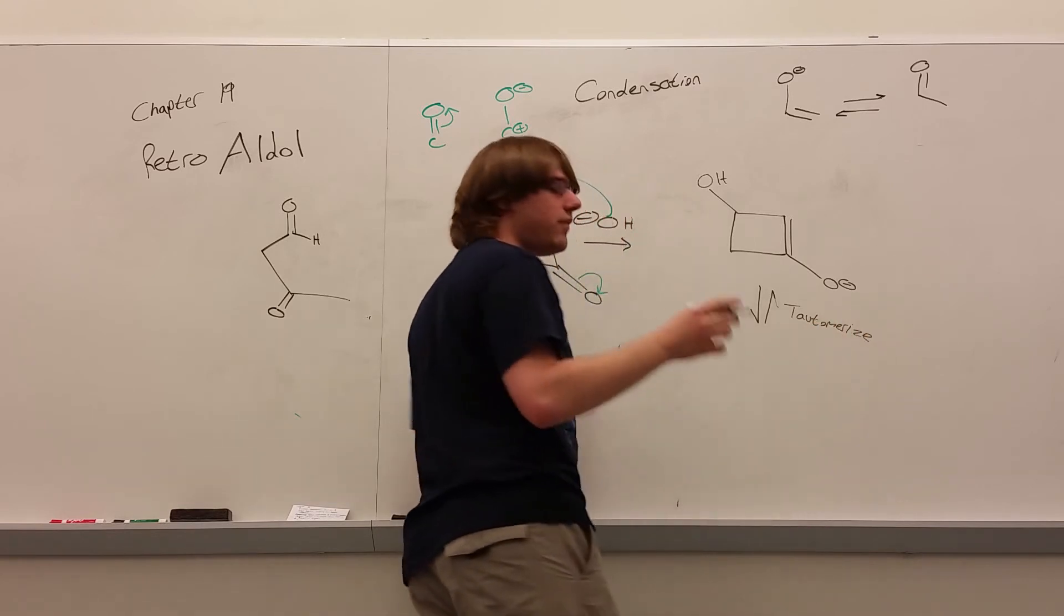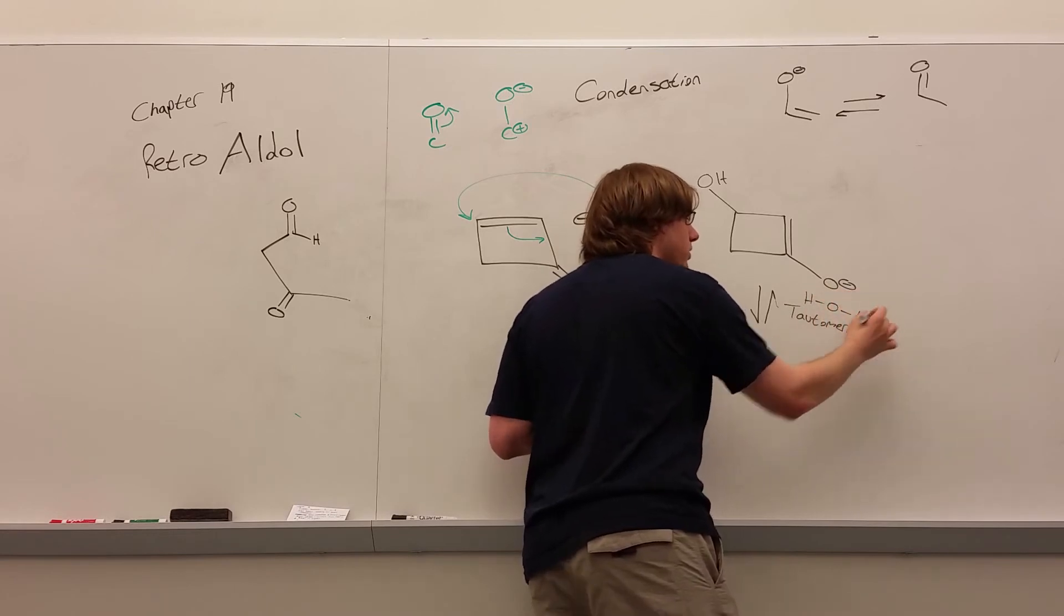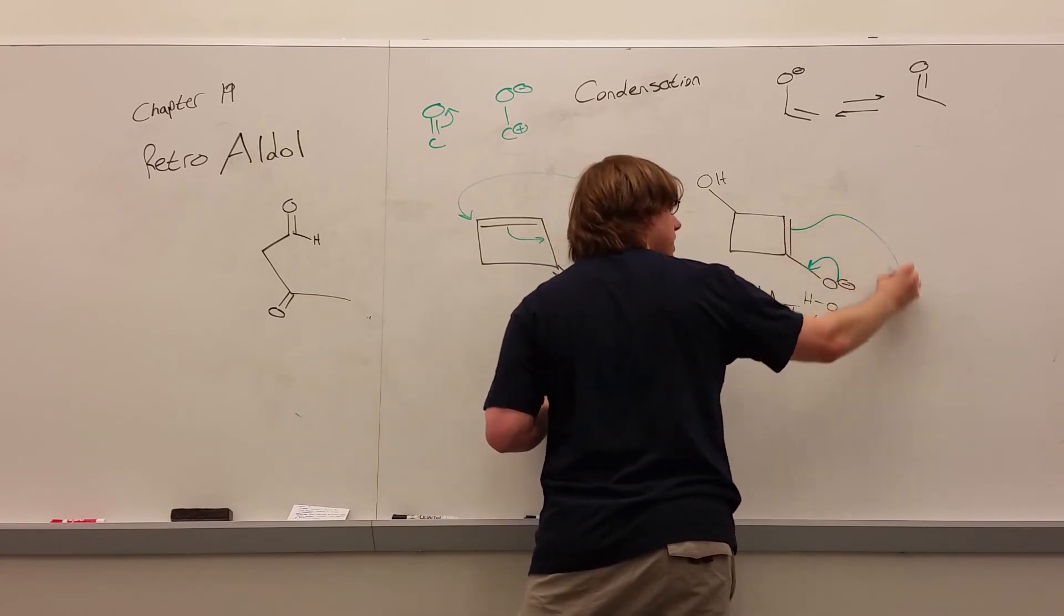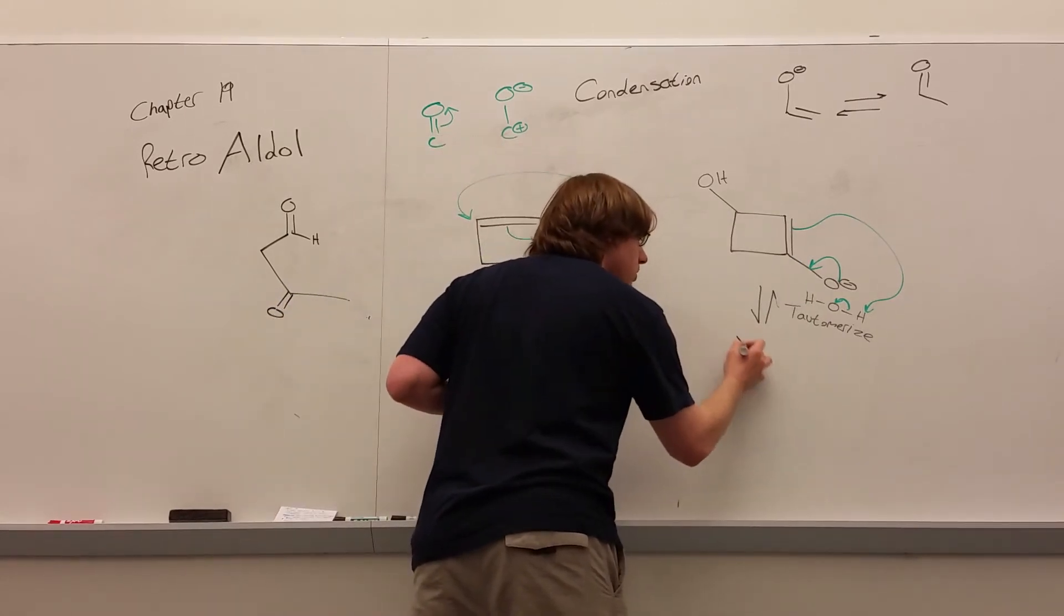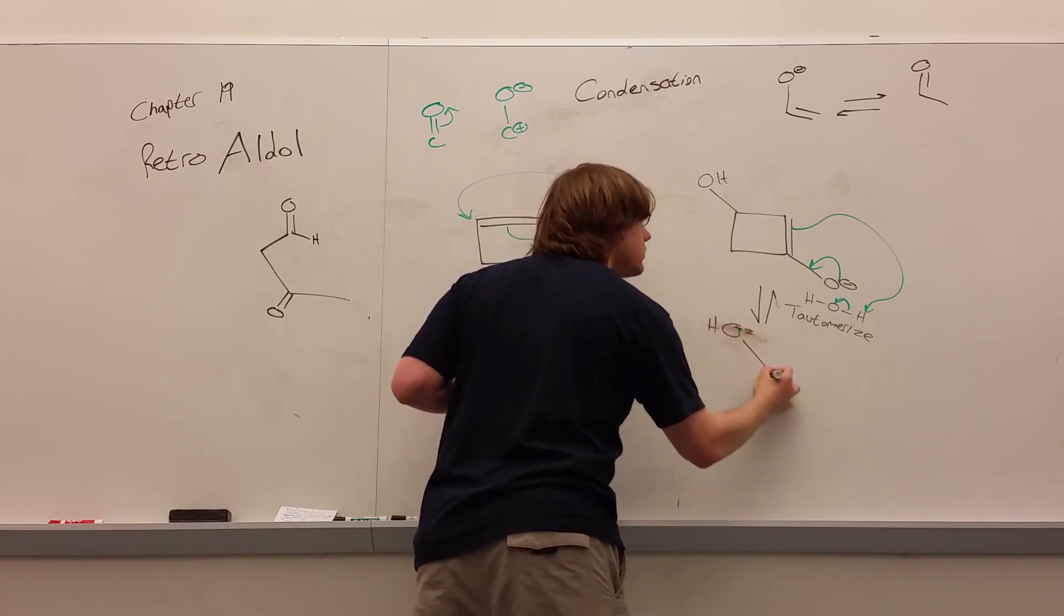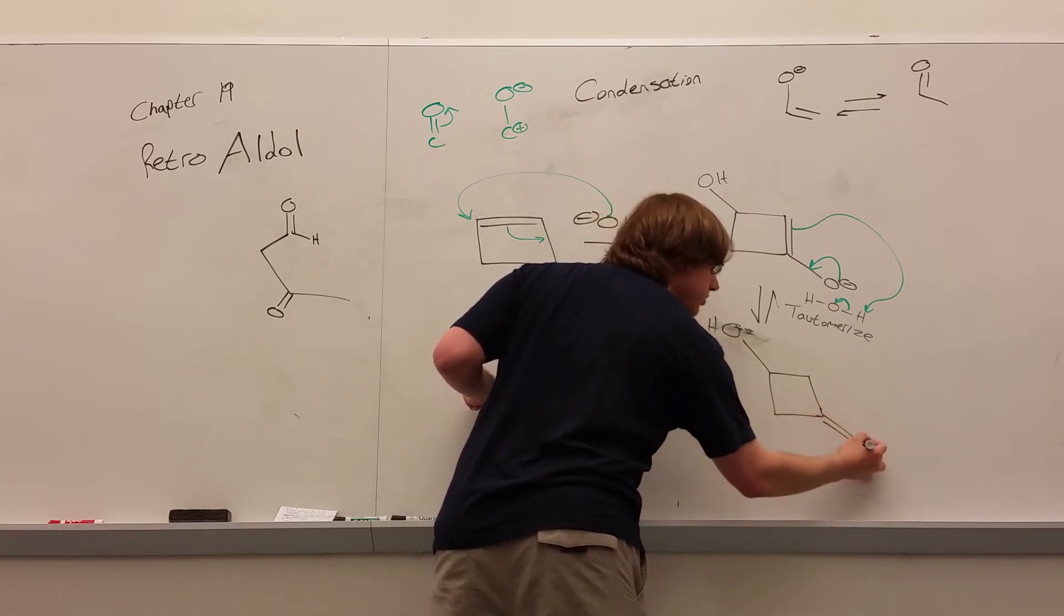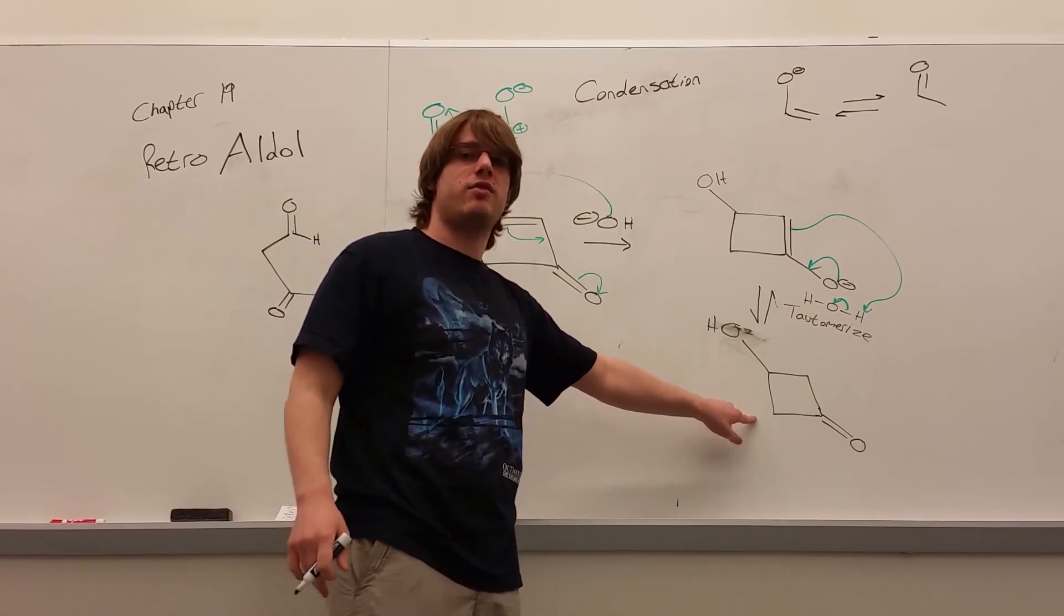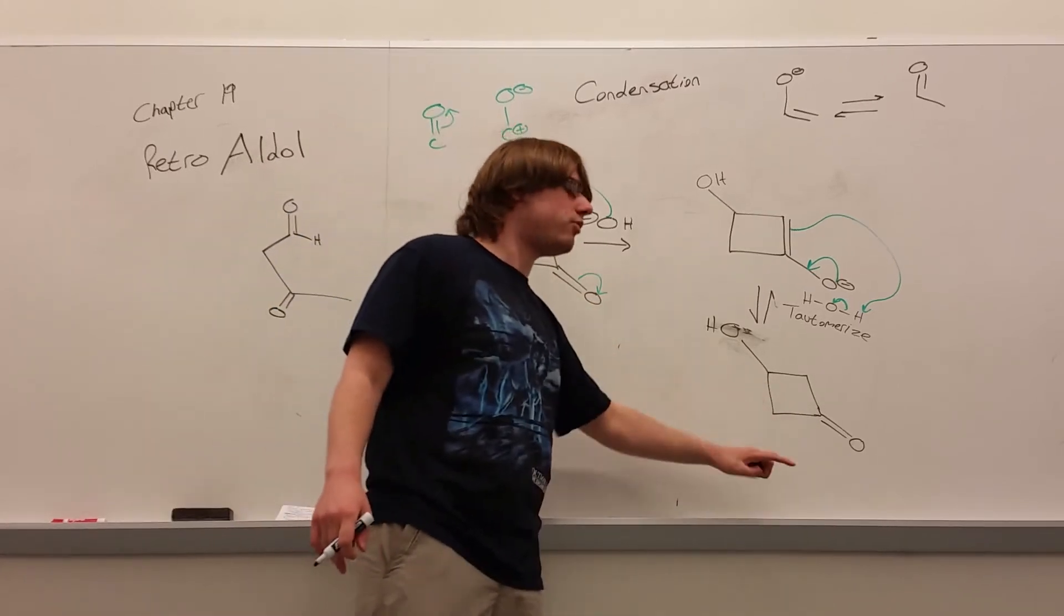You can either write reverse arrows and then, say, tautomerize. Or, if you want to be perfectly accurate, have some source of a proton. Let's say water is floating around because we saw before water was floating around. And that OH- will swing down and the carbon on the end of that double bond will grab the proton. Now, tautomerizing this back into its ketone form, its carbonyl form. Okay? And notice this was the product we made of the aldol reaction before we did the condensation. And this is what we got after the condensation. So we're about halfway now.